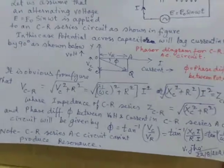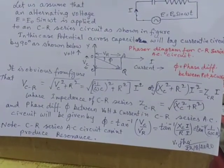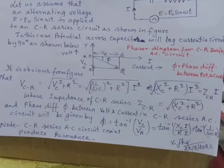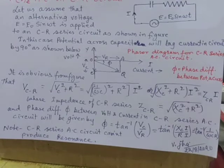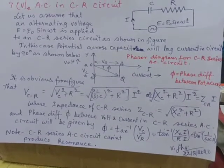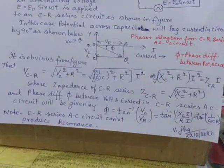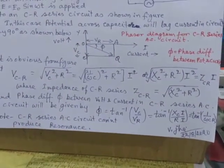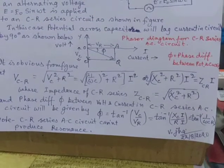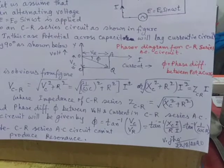that potential drop across CR will be square root Vc square plus R square. And as a result, we see that VCR is equal to square root XC square plus R square with the bracket into I square, a whole thing under root. And from this expression, we also get the impedance for CR circuit equal to square root XC square plus R square, where XC is nothing but 1 by omega C. So, this is about impedance,